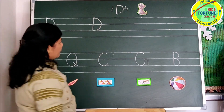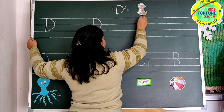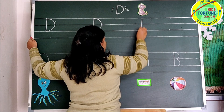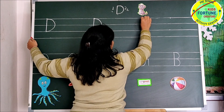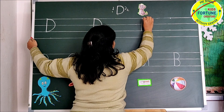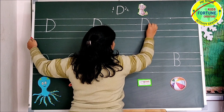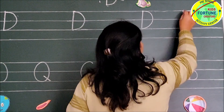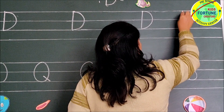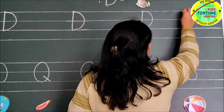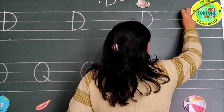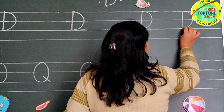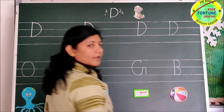Letter D. Now we will join the dots. Put your pencil on the papa line, make a standing line from papa line to baby line. Once again put your pencil on papa line and make a right curve from papa line to baby line. Letter D. One more time: make a standing line from papa line to baby line, again put your pencil on papa line and make a right curve from papa line to baby line. Letter D.